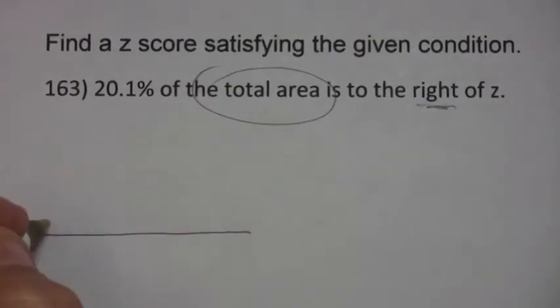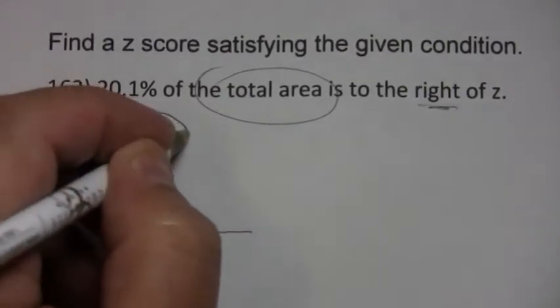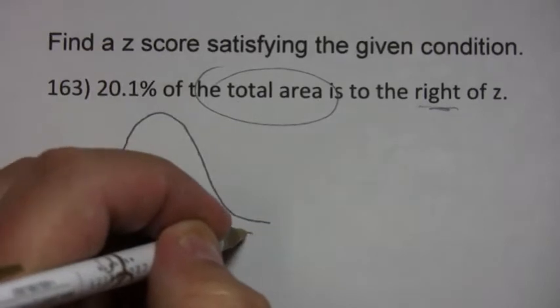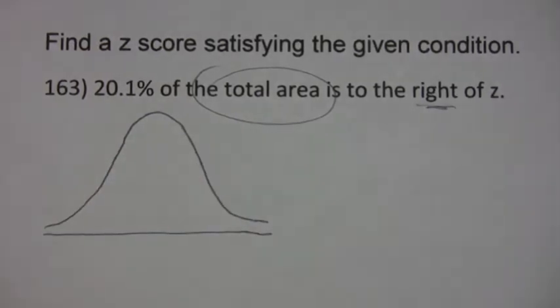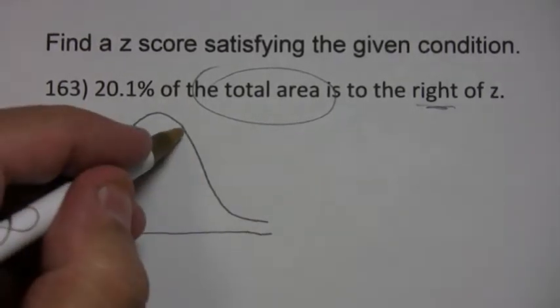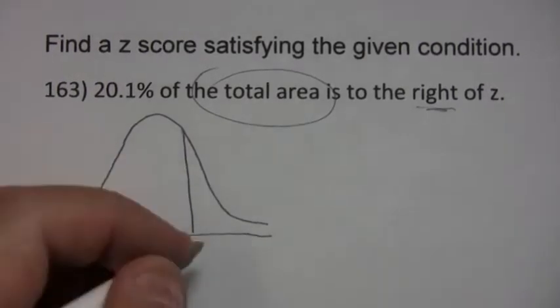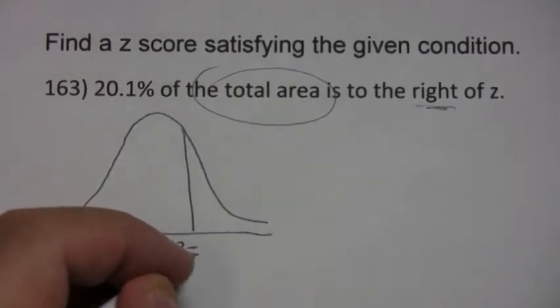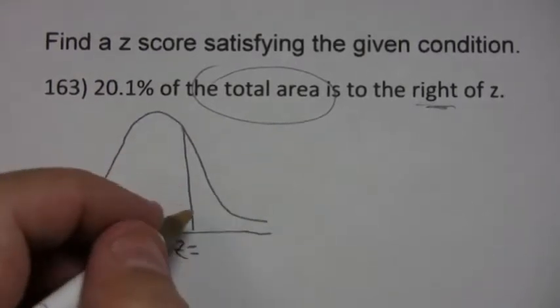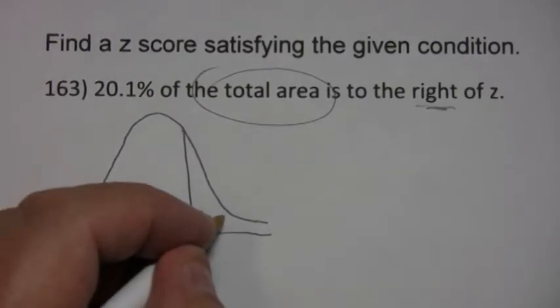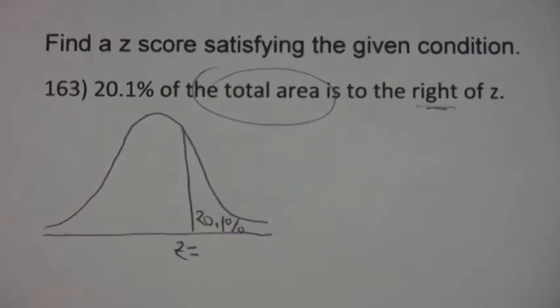So what they're asking us for, and here I think a picture is especially useful, is they want to know what value of z breaks it into where there's 20.1% of the area to the right of that value of z.